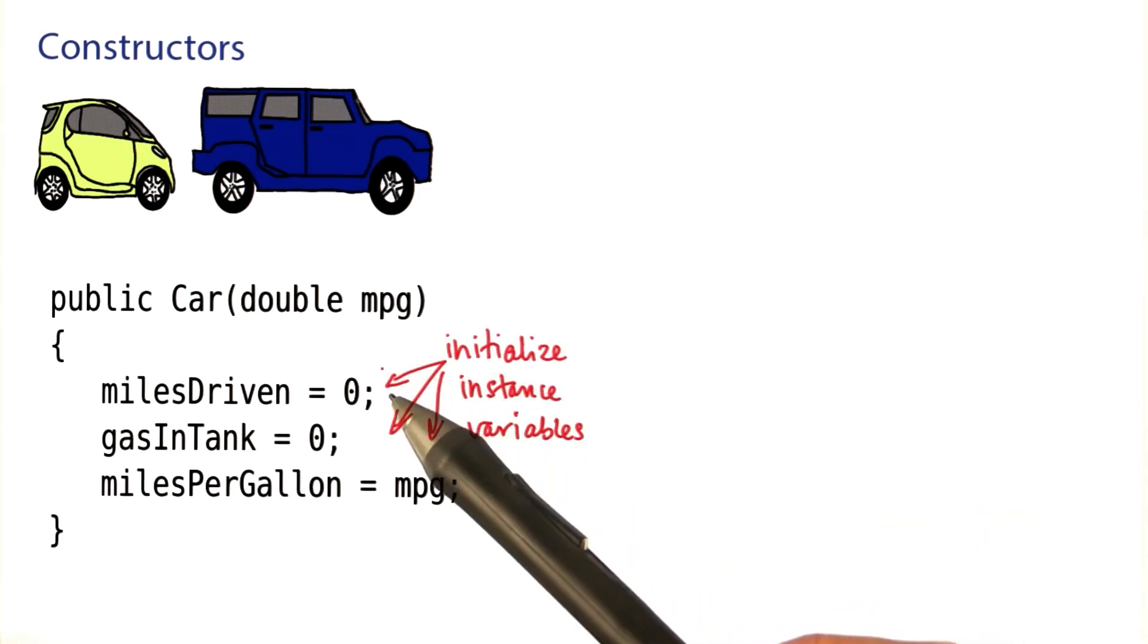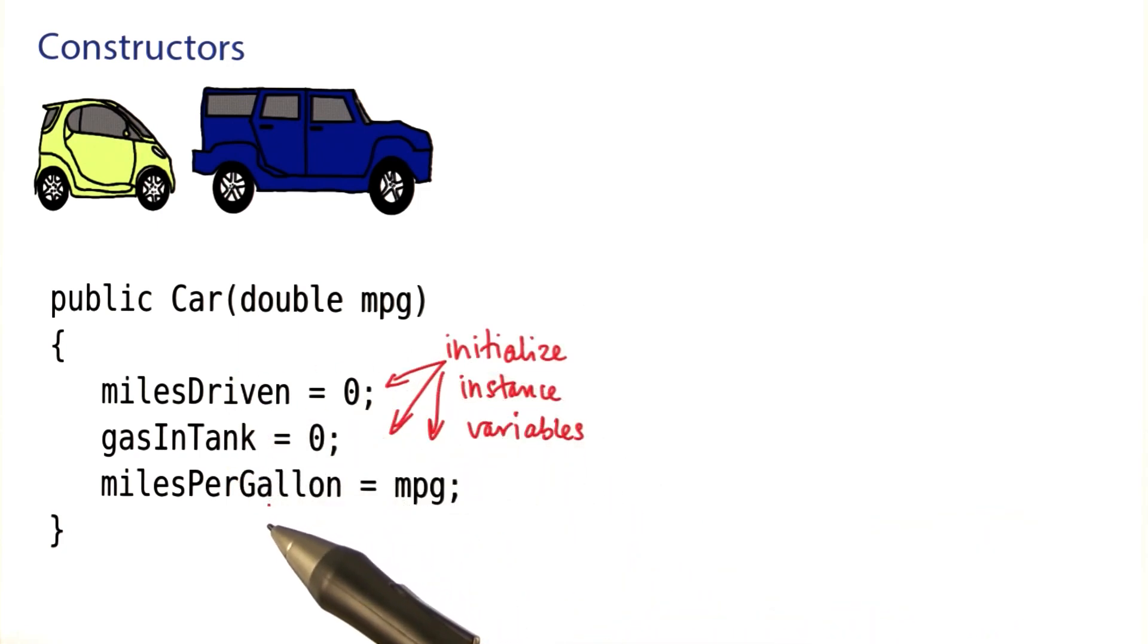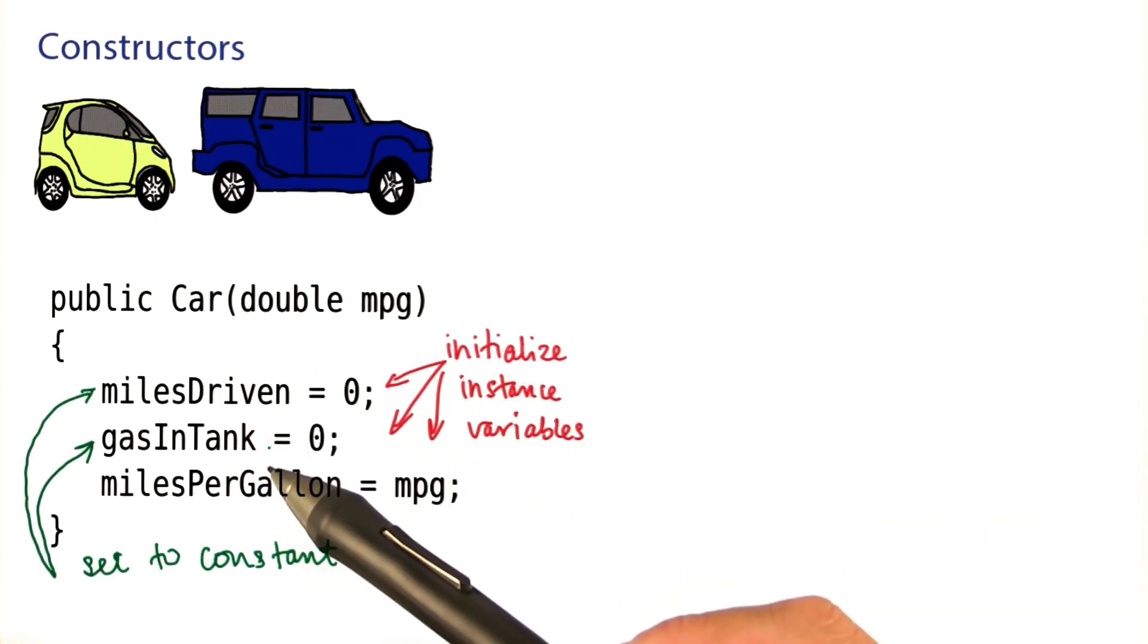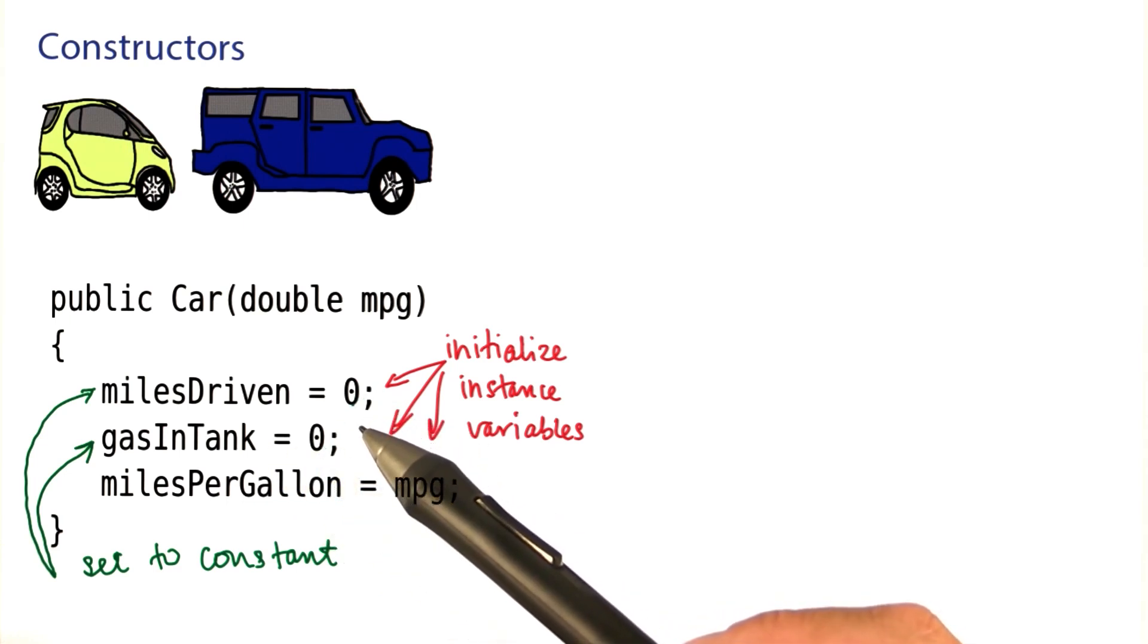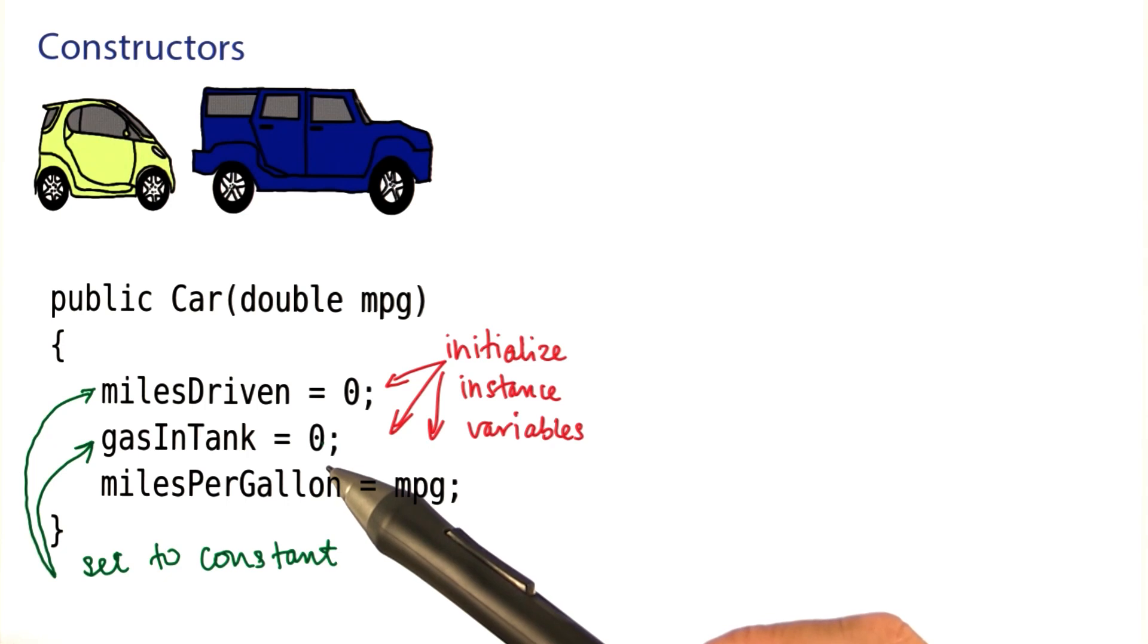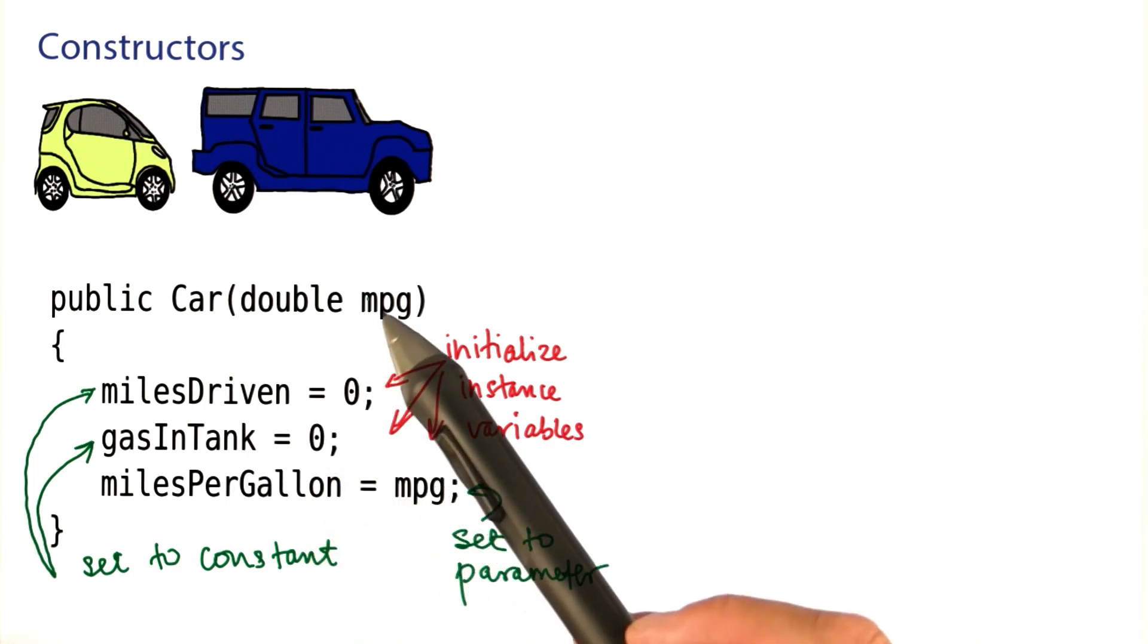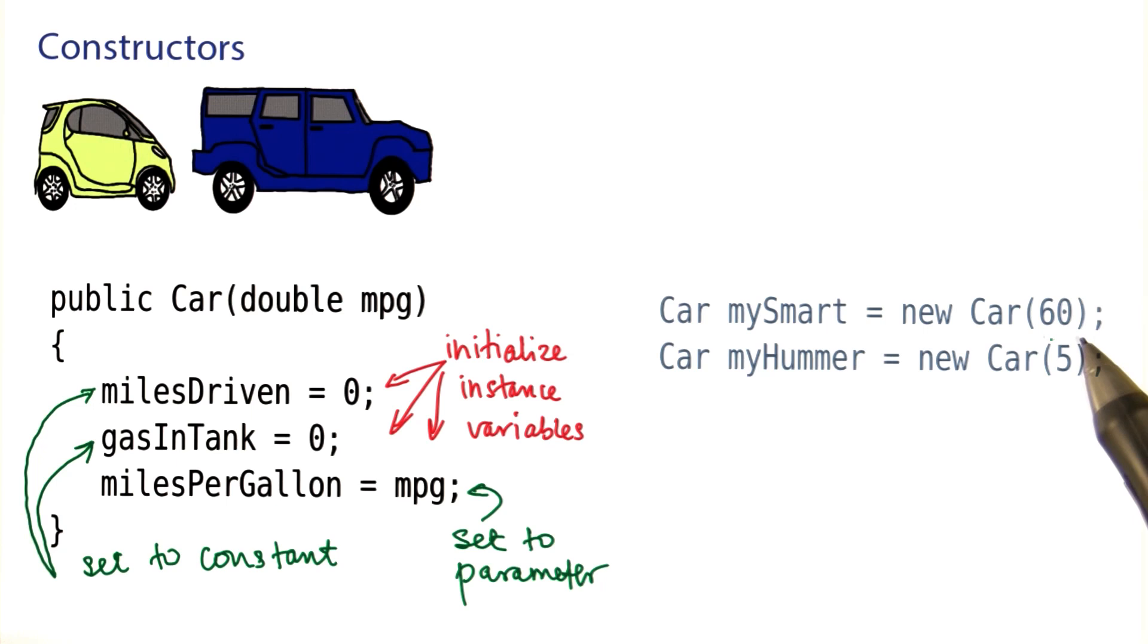Here is an example. In the body of the constructor, we simply initialize the instance variables. The first two here are set to a constant value. When a car is first created, it has not driven any miles and its tank is empty. This instance variable is set to a parameter. That allows you to construct cars with different properties.